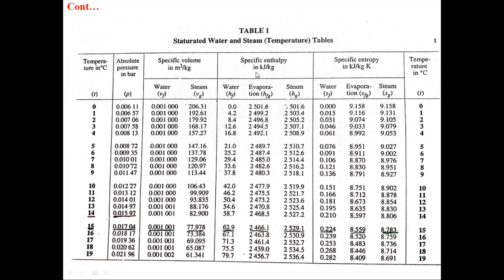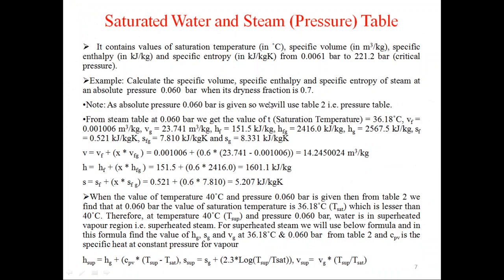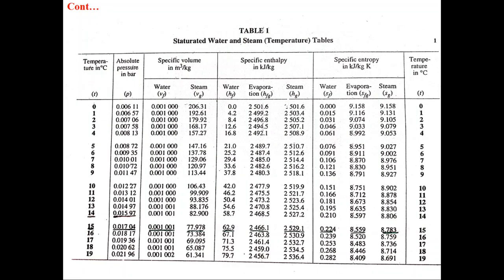The fourth column is specific enthalpy in kJ per kg, having three parts: HF (saturated liquid specific enthalpy), HFG (latent heat of vaporization), and HG (saturated vapor specific enthalpy). The fifth column is specific entropy in kJ per kg Kelvin: SF (saturated liquid specific entropy), SFG (specific entropy during evaporation), and SG (saturated vapor specific entropy).